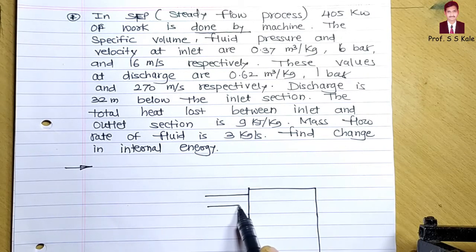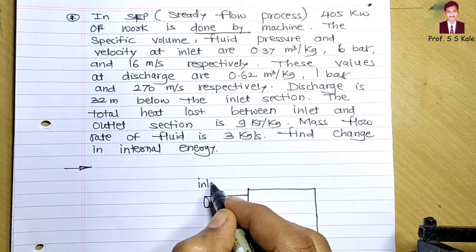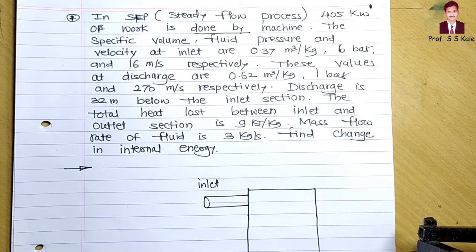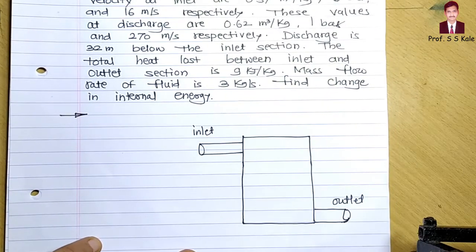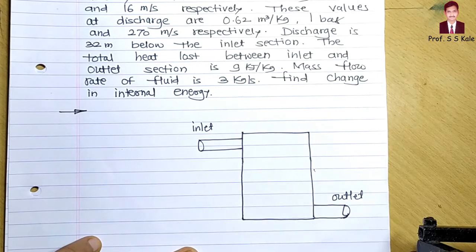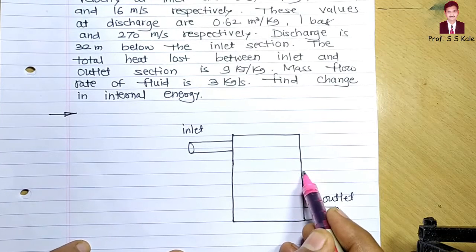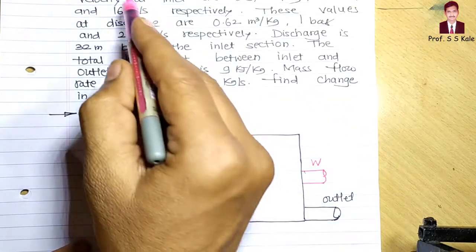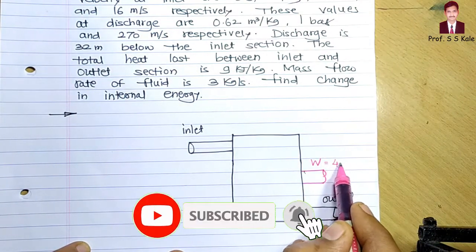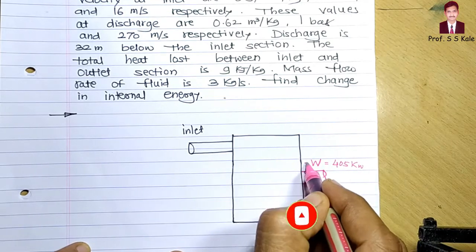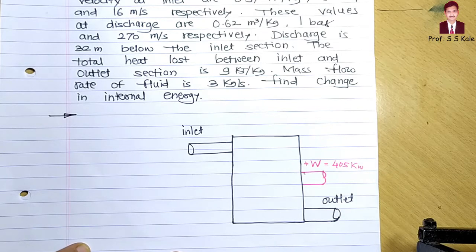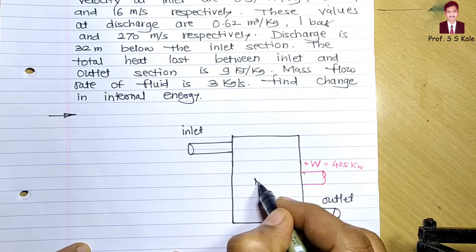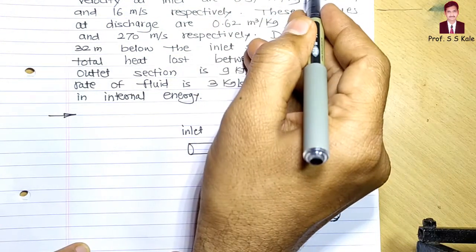I'll show the inlet pipeline and the outlet pipeline. From this machine, we are also getting work output from a shaft. Since work is done by the system, it is positive — 405 kilowatt work is done, so it will be positive. If work were consumed by the machine, it would be negative.